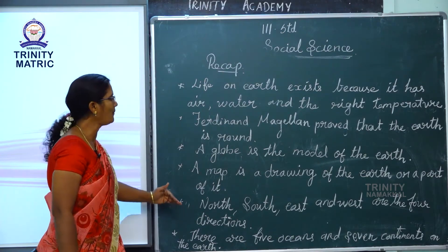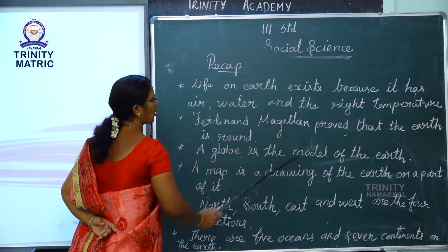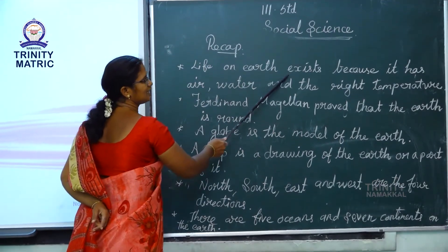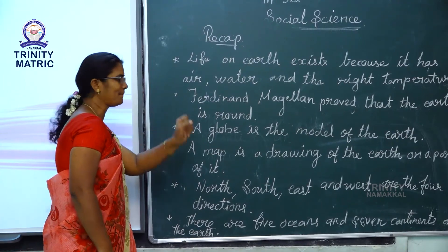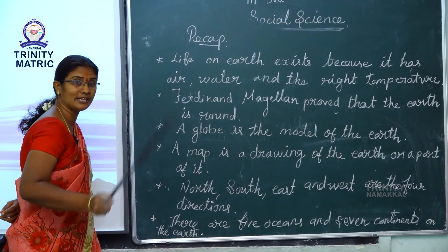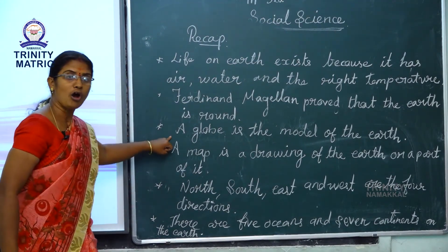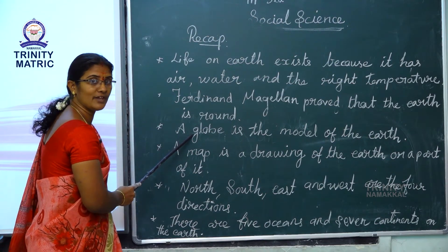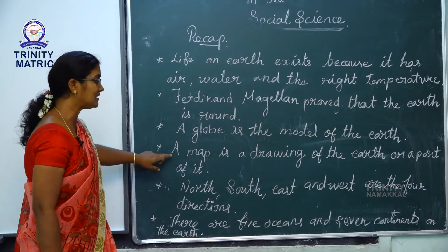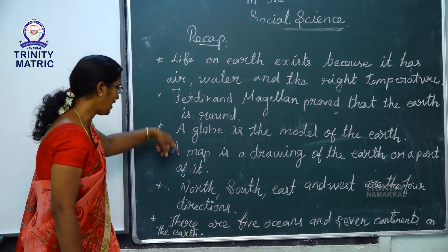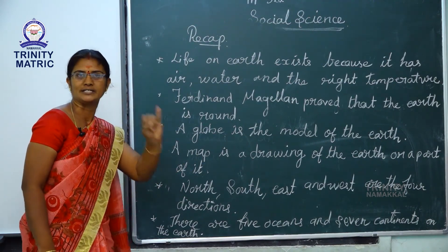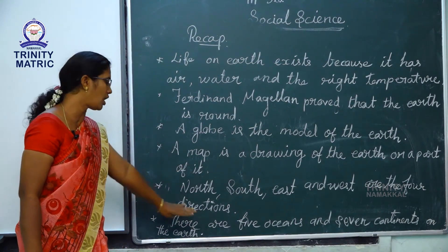Let's recall all the points. Life on earth exists because it has air, water and the right temperature. Ferdinand Magellan proved that the earth is round. A globe is the model of the earth. A map is a drawing of the earth or a part of it. North, South, East and West are the four directions.